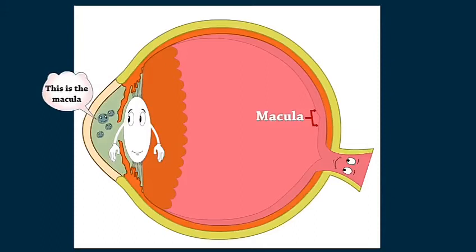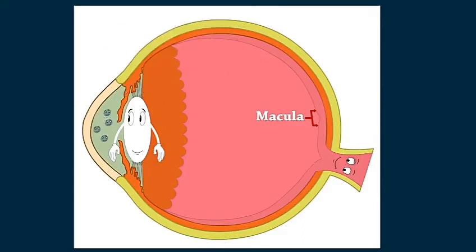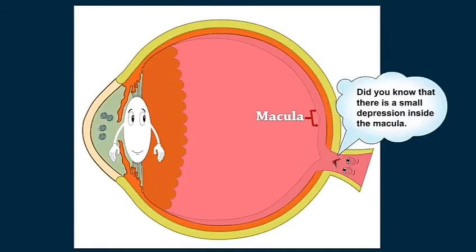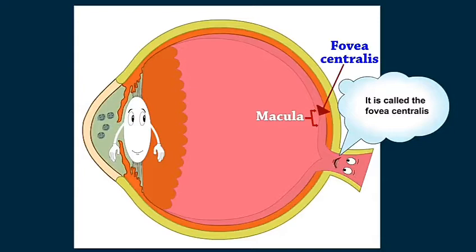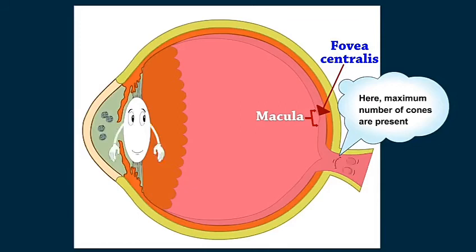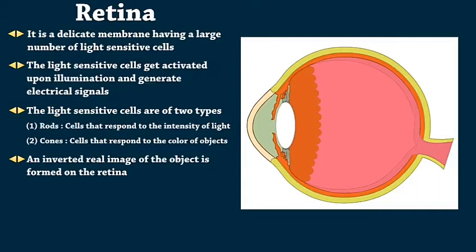This is the macula. It is a tiny area in the retina which is responsible for clear and sharp vision. Did you know that there is a small depression inside the macula? It is called the fovea centralis. Here, maximum number of cones are present. An inverted real image of the object is formed on the retina.